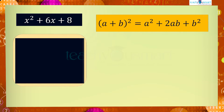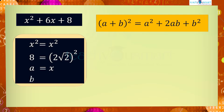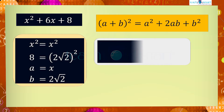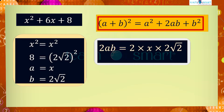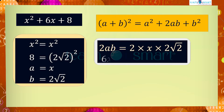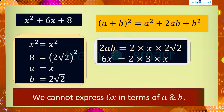Here we can write x² as x² and 8 as (2√2)², so a = x and b = 2√2. If the middle term 2ab can be written as 2 · x · 2√2, then we could apply the (a+b)² identity. But when the middle term 6x is factorized we get 6x = 2 · 3 · x — that is, we cannot express 6x in terms of a and b.